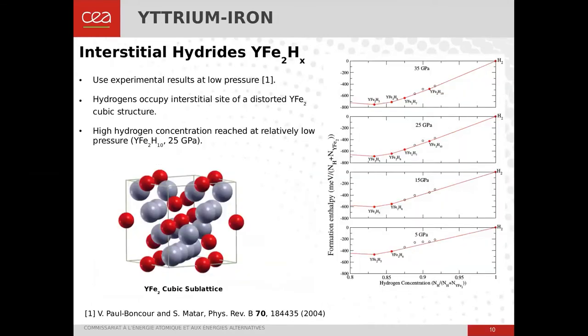Thanks to the use of experimental information, we also investigated a ternary system made of yttrium and iron. We predicted a high stoichiometry of 10, corresponding to one interstitial-type hydride predicted stable at 25 GPa. In addition, this system is predicted to have a negative formation enthalpy at normal pressure. If this is experimentally verified, you have a promising system to reach high hydrogen concentration.